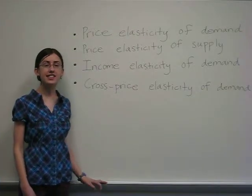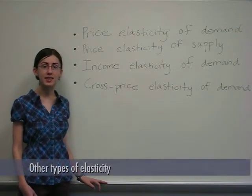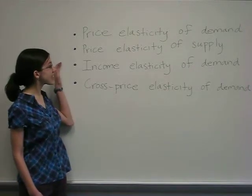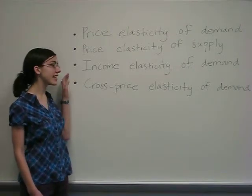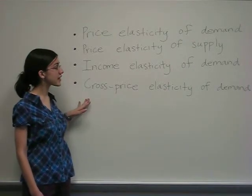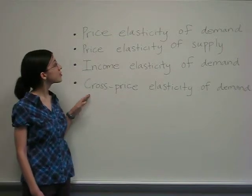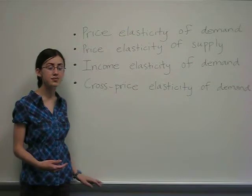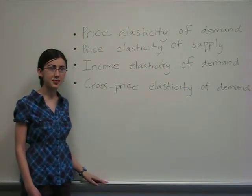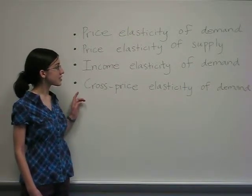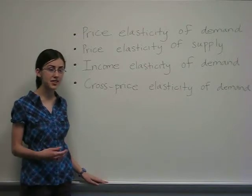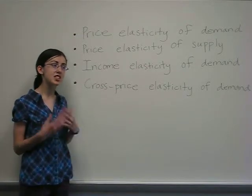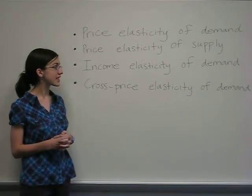While price elasticity of demand is most commonly used in economics, there are also several other types of elasticities: price elasticity of supply, income elasticity of demand, and cross-price elasticity of demand. Price elasticity of demand measures the change in quantity demanded of a good to its change in price, while price elasticity of supply measures how much suppliers will change quantity supplied in response to a change in price.